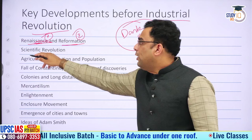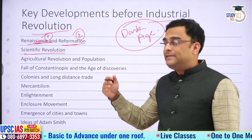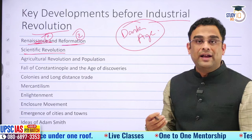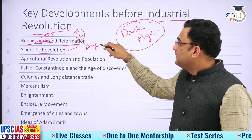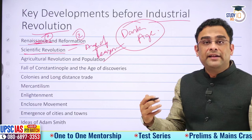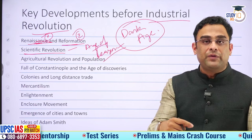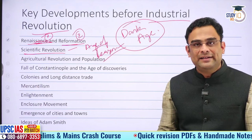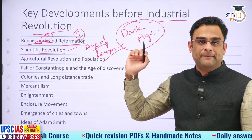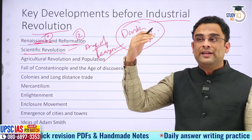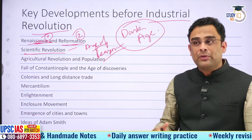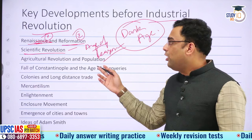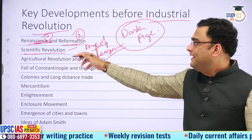Along with Reformation, Europe also went through a scientific revolution. Europeans became more bold and adventurous, moving from an age of dogmas to an age of reason. They were not ready to accept anything on face value — they wanted evidence, logic, and convincing arguments. This attitude of critical and independent thinking led to many breakthroughs in science and technology. This age is called the scientific revolution — the time of Newton, Galileo, Copernicus, Mendel and others.